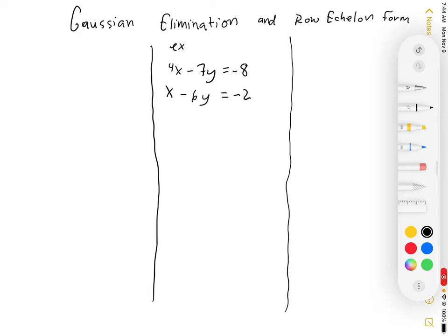So today we are talking about Gaussian elimination. It's named after a very famous mathematician by the name of Gauss, who figured out a lot of different things that are very important and is kind of the father of modern mathematics today.